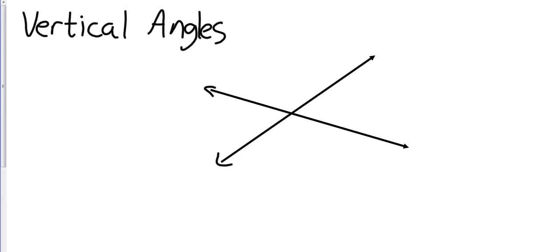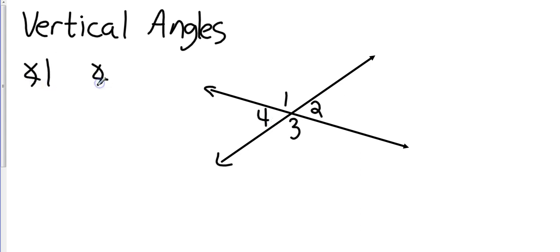Our third relationship is vertical angles. These are formed when two lines intersect. I'm going to label the four angles with numbers 1, 2, 3, and 4. Vertical angles are directly across from each other, so angle 1 and angle 3 are vertical angles, and angle 2 and angle 4 are also vertical angles.